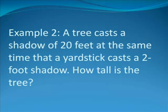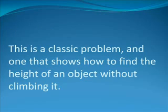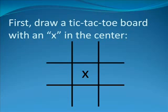Example 2. A tree casts a shadow of 20 feet at the same time that a yardstick casts a 2-foot shadow. How tall is the tree? This is a classic problem, and one that shows how to find the height of an object without climbing it.